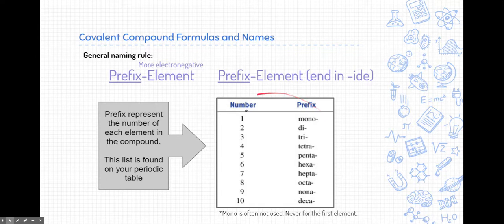Now these prefix represent the numbers of each element in the compound. And so here is a list of the different prefix you have here. Notice one is mono, think of like a monocle, which is a single eyepiece. Two is di and three is tri, like a tricycle has three wheels. So a lot of these are just mathematical prefix that represent the number of element of that specific element in the compound. Please note that mono is sometimes not used and we never use it for the first element.